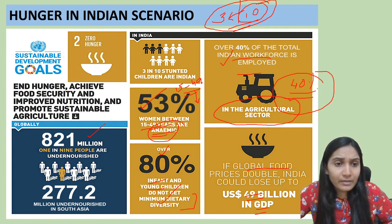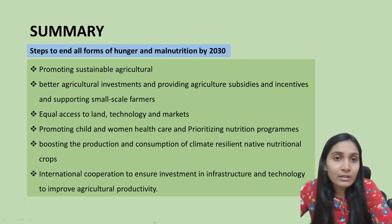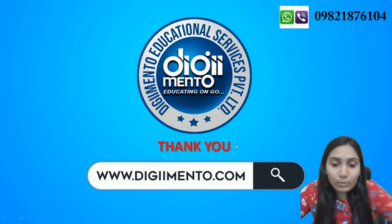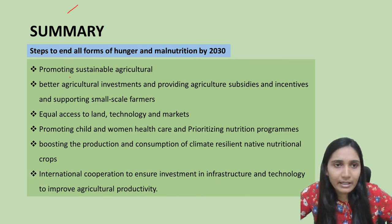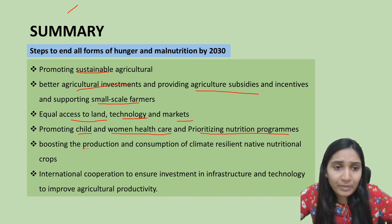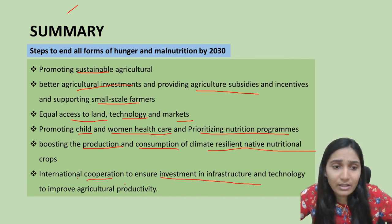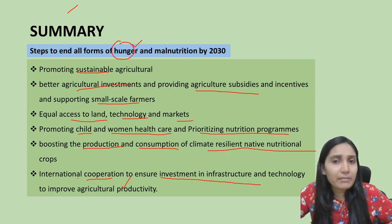Globally, 821 million — that is one in nine people — are undernourished, and in South Asia alone it is 277.2 million. The steps needed to end all forms of hunger and malnutrition by 2030 include: promoting sustainable agricultural practices, better agricultural investments, providing subsidies and incentives to small-scale farmers, equal access to land, technology and markets, promoting child and women healthcare, prioritizing nutrition programs, boosting production of climate-resilient nutritional crops, and international cooperation to invest in infrastructure and technology to improve agricultural productivity.